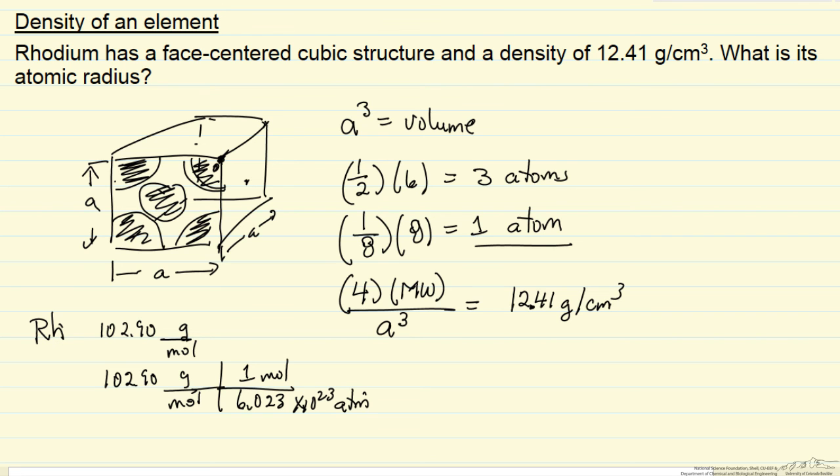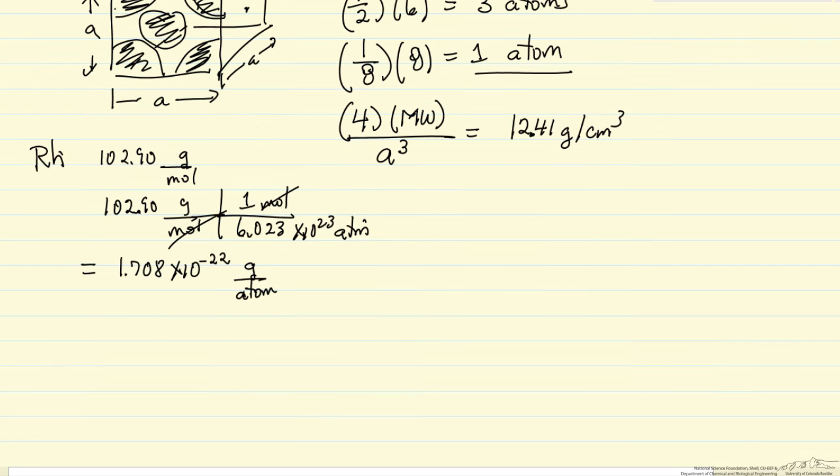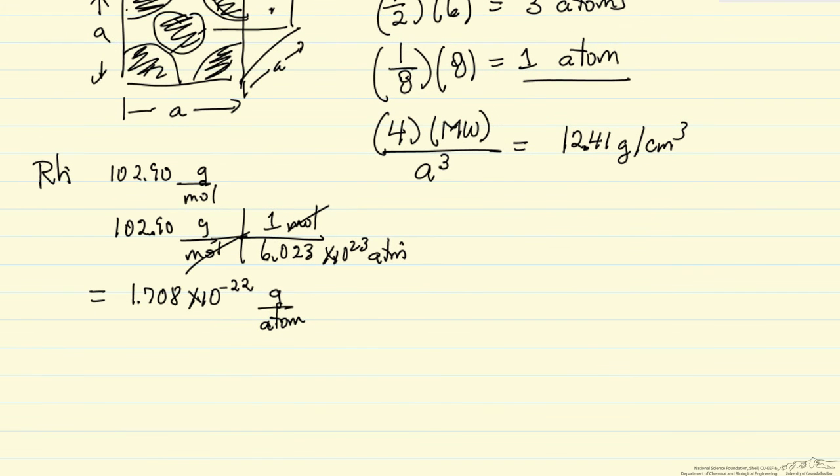So I do this multiplication, and I calculate for rhodium the number of grams per atom. That's the number here, so it's not really molecular weight, but it's really grams per atom. In other words, we have four atoms.